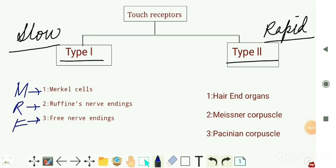The mnemonic for type 2 touch receptors is HMP. H stands for hair end organs, M stands for Meissner's corpuscles, and P stands for Pacinian corpuscles.